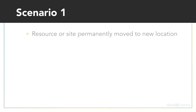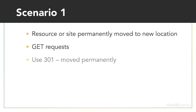Scenario 1: You've moved a resource permanently to a new location. This could be a different URL on the same domain, or it could be a new domain. In this scenario, use 301 moved permanently. The browser will automatically load the new location, and search engines will treat the new location as the canonical location, so you don't lose any of that precious SEO juice. A 301 message kind of indicates the original location will eventually disappear, and actively encourages the use of the new location instead.